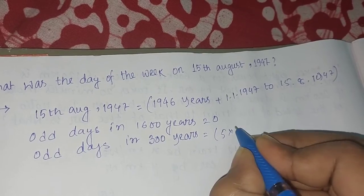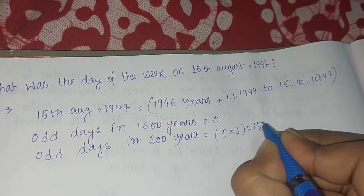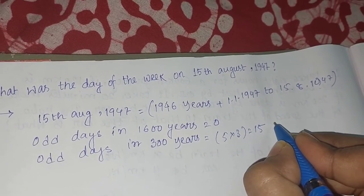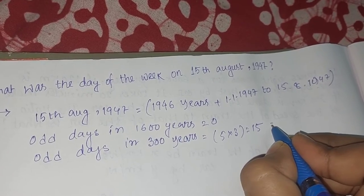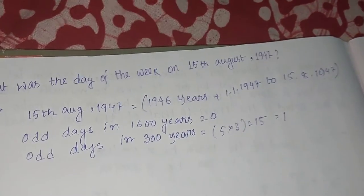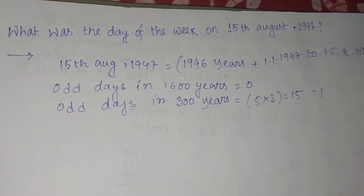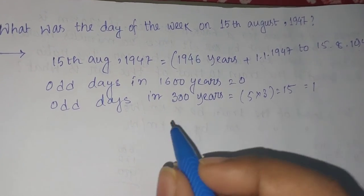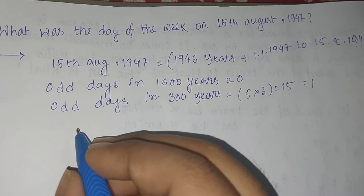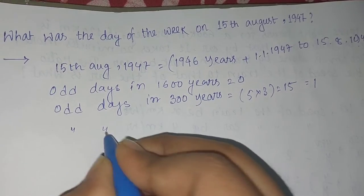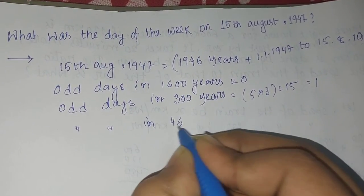That will be 5 into 3 equals to 15. This way I can find one odd day in 300 years. Now coming to the point, odd days in 46 years.